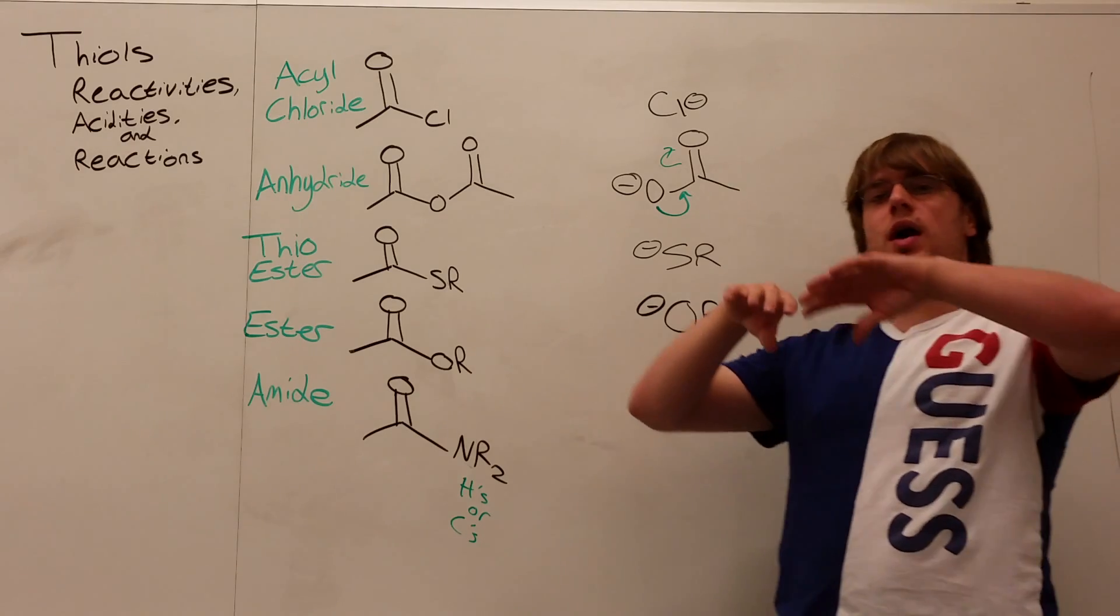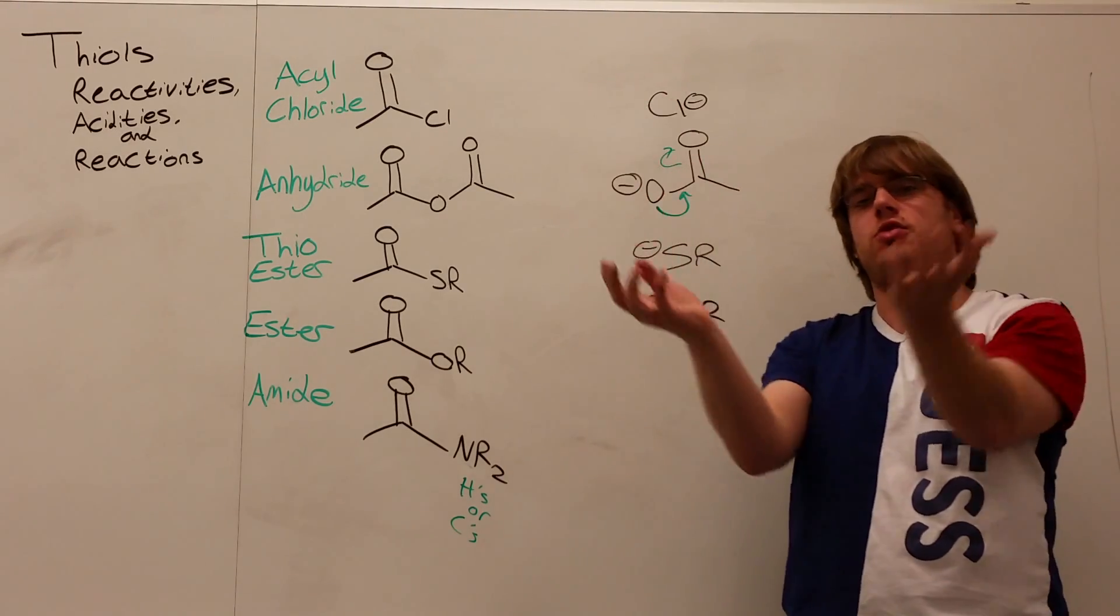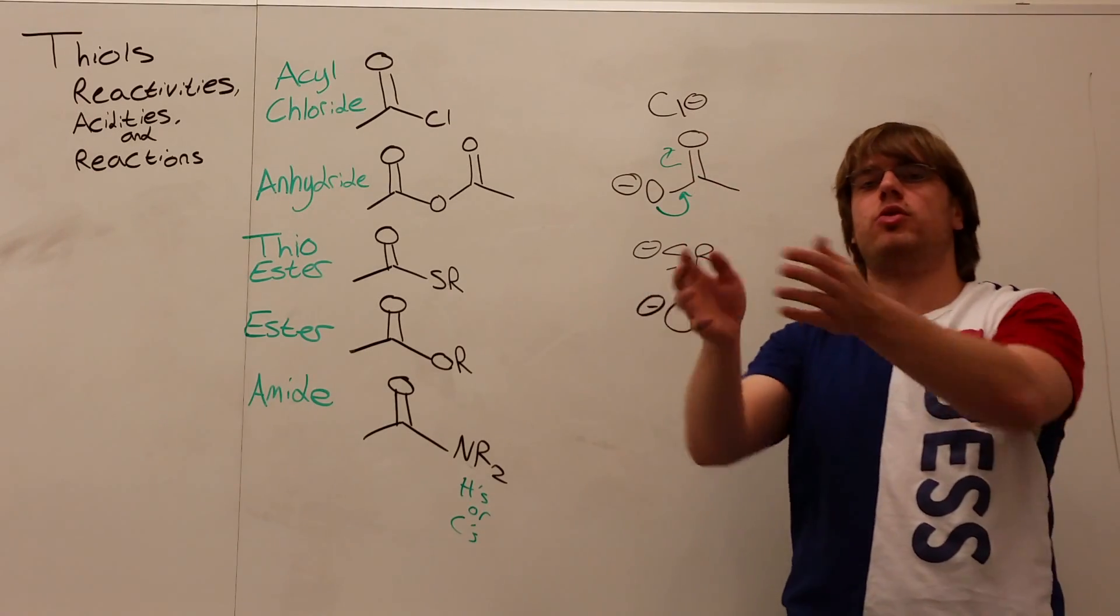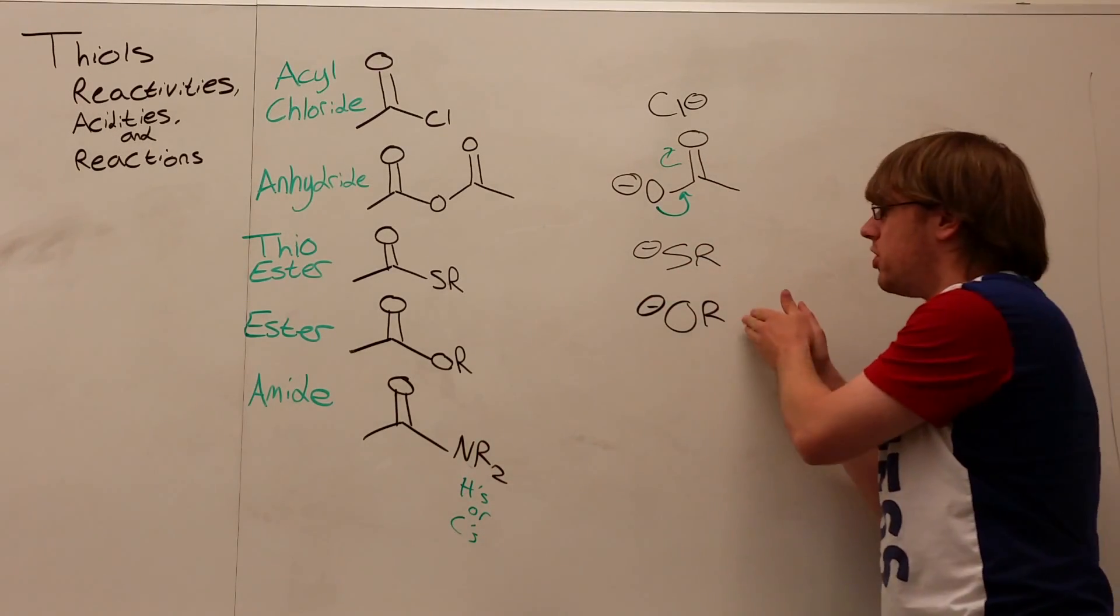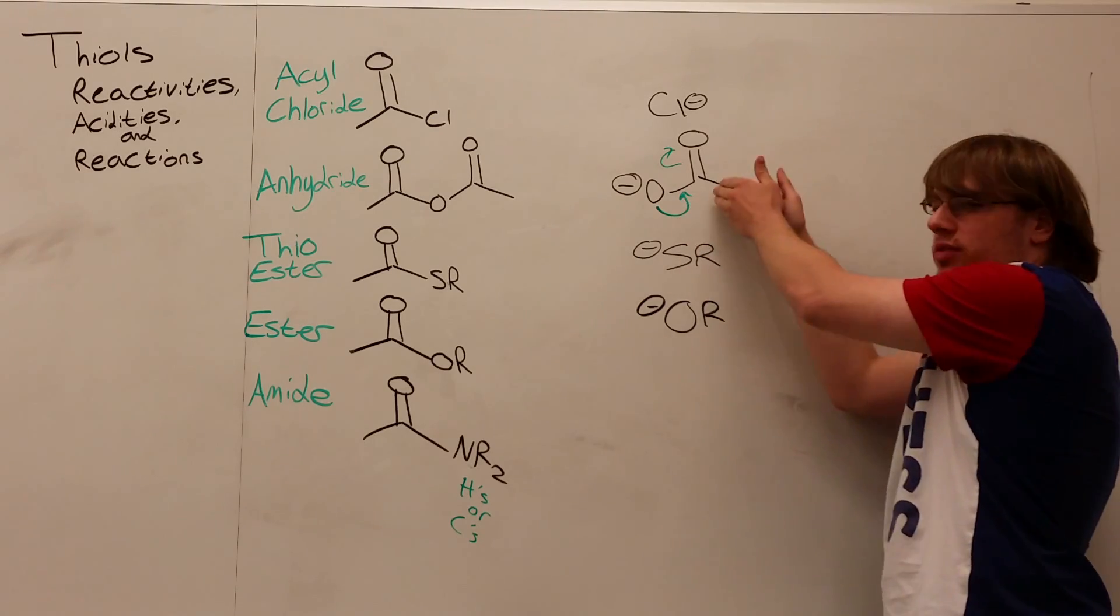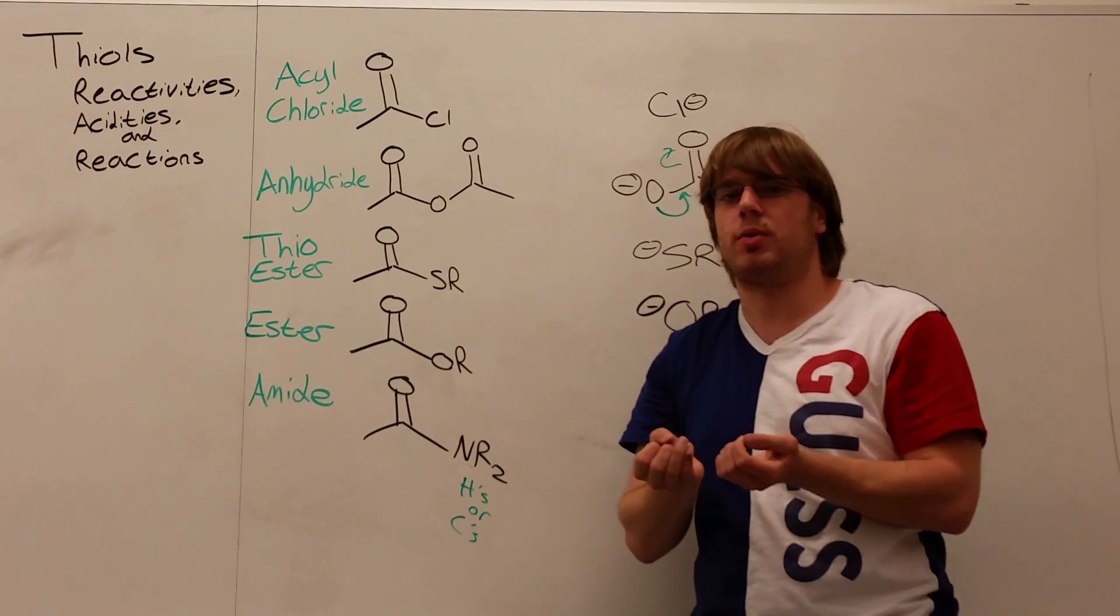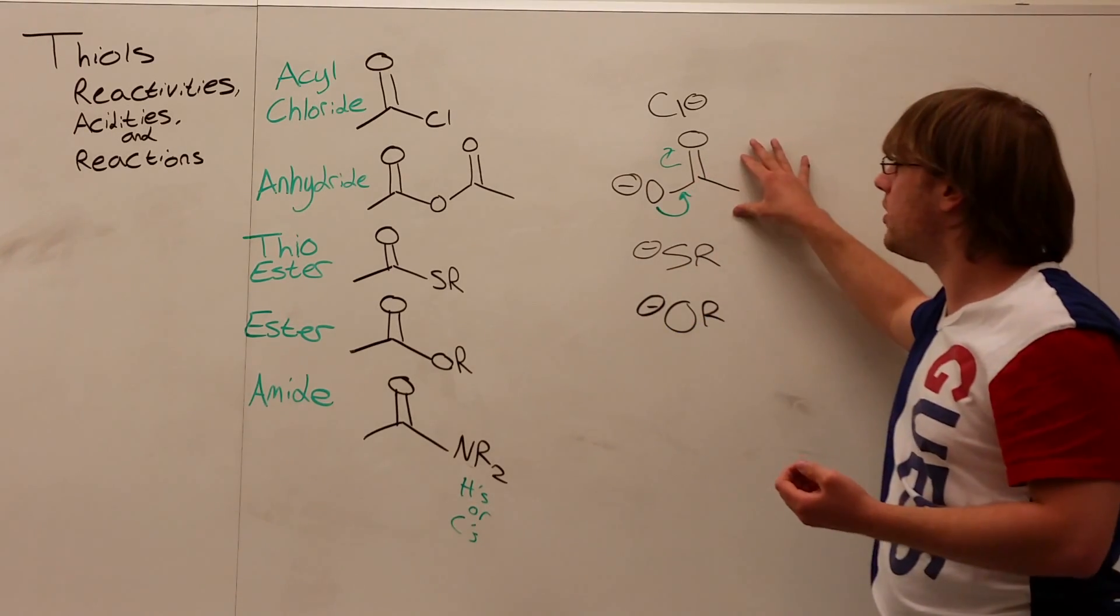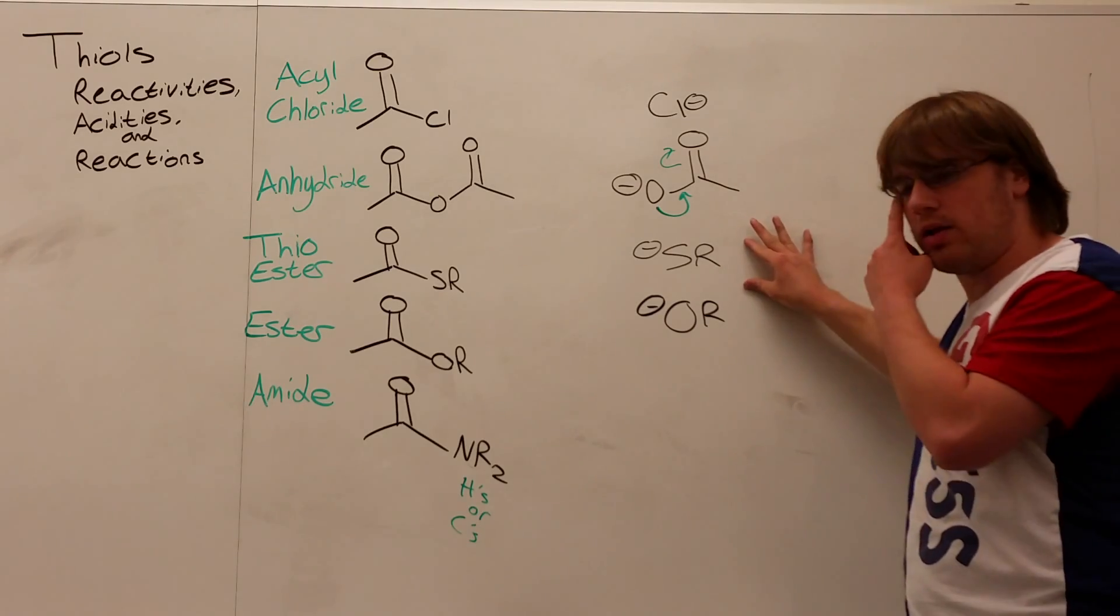And because you have a larger atomic radius in sulfur, you have more room for that negative charge's electrons to float around, and so they're more stable as a result. That's why SR minus is a better leaving group than OR minus. But it's not as good as O minus with resonance. Resonance has a better effect than just having a larger atomic radius, which is why the anhydride leaving group is still more stable than the SR minus.